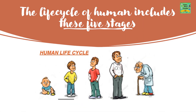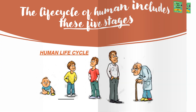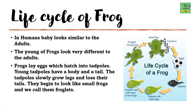The life cycle of a human includes five stages. In humans, babies look similar to adults. The young of frogs look very different to the adults.